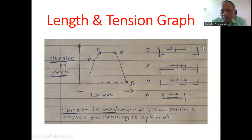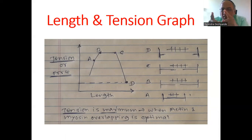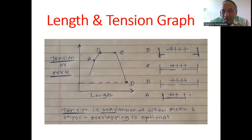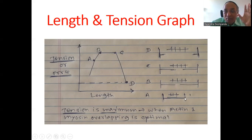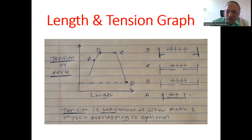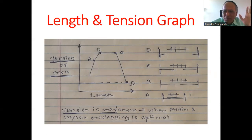When will tension develop? When actin and myosin have maximum overlapping. Maximum overlapping of actin and myosin produces maximum tension. It is like a rubber band — too much overlapping is also not good, and too little is not good either. At point A, when the filaments are too close together, tension is also reduced because some parts of the actin will not be overlapped by the myosin. So tension depends on optimal overlapping — not too far apart and not too close.